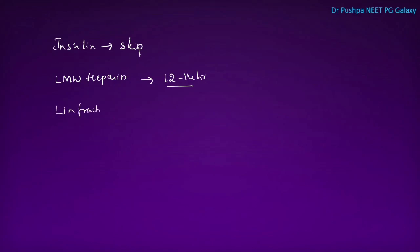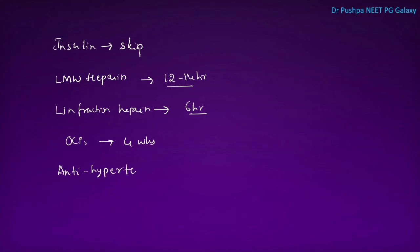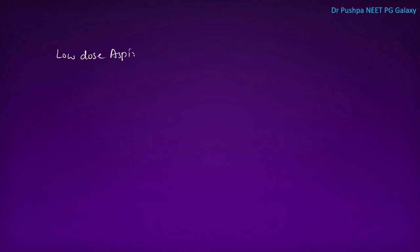OCPs must be stopped 4 weeks before surgery, whereas progesterone-only pills can be continued. Anti-hypertensives should be taken on the morning of surgery, and thyroid drugs should be continued so the patient is in a euthyroid state. Smoking should ideally be stopped 6 to 8 weeks before surgery. Low dose aspirin can be continued during surgery except for closed-space surgeries such as brain, spinal cord, or eye surgery.